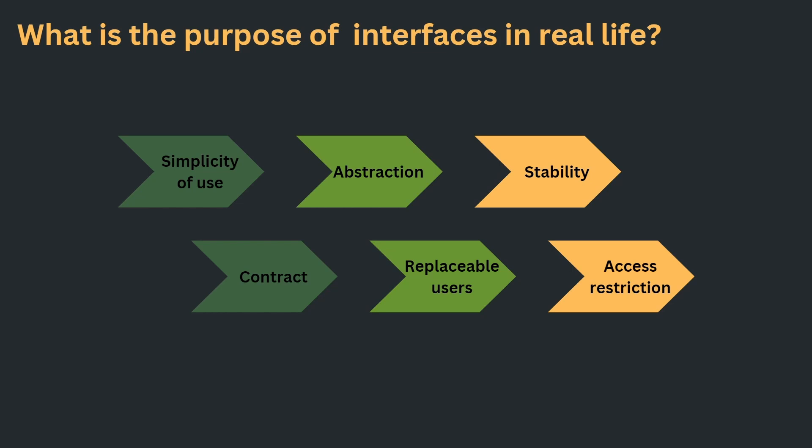And to round this video up, all these purposes of interfaces that we found in real life transfer very, very well to what we find in software. All of those six characteristics that we just talked about are very important in software and are the reasons why we use them in software. This little introduction should have given you plenty of motivation to learn more about interfaces, especially when it comes to software engineering. We will dive into first implementations and what the benefits are in the next video. If you don't want to miss this video, then hit the subscribe button, and if you liked the video, well then like it.